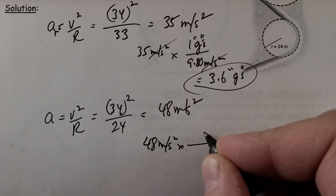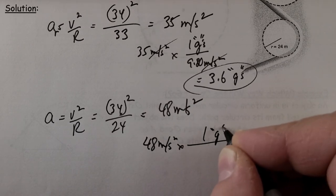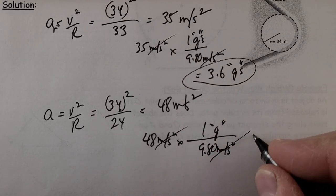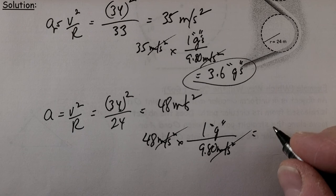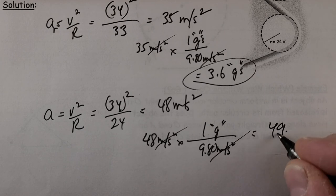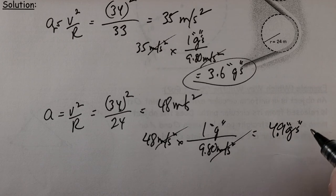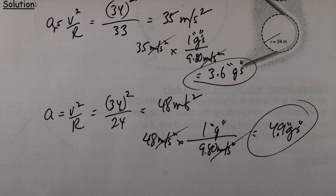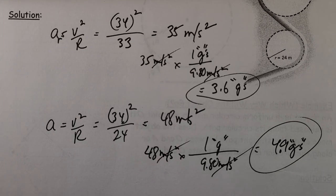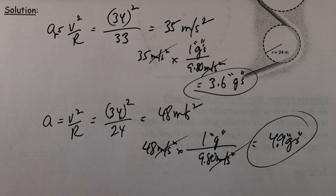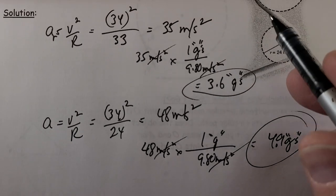If I do this one, meters per second multiplied by 1g which is 9.8 meters per second squared. If I cancel that off, I'm going to get 4.9 g's. So you can see greater acceleration there. We kind of associate g's with g force and the force that we feel that's associated with that acceleration. You can see the effects that you would feel going around there.